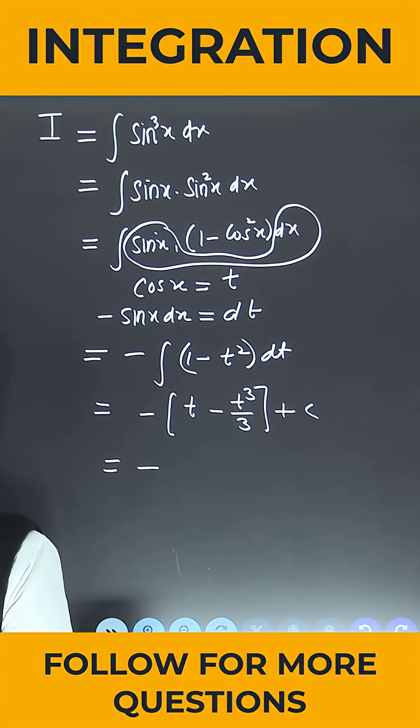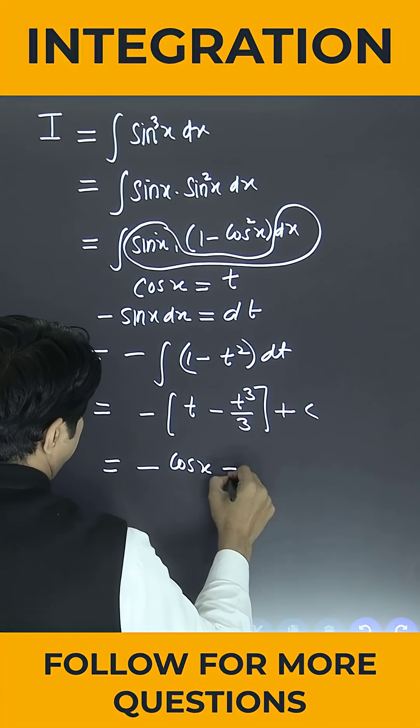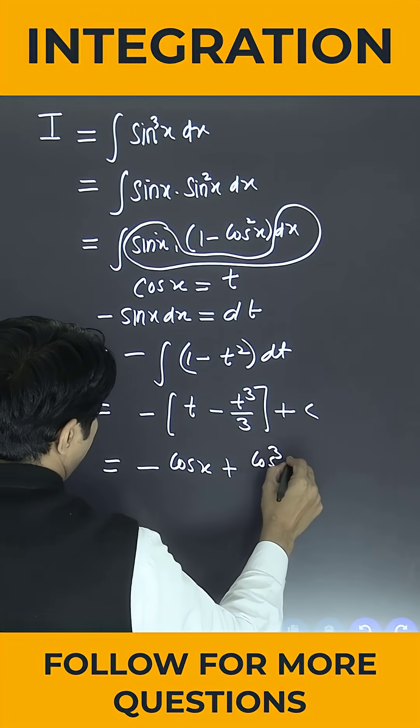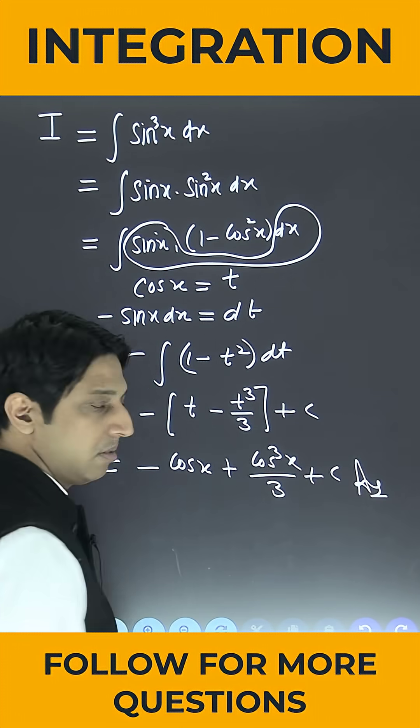So this is minus. What is the value of small t? It is cos x. So this is cos x minus minus plus, this is cos cube x divided by 3 plus c. This is the answer. Thank you.